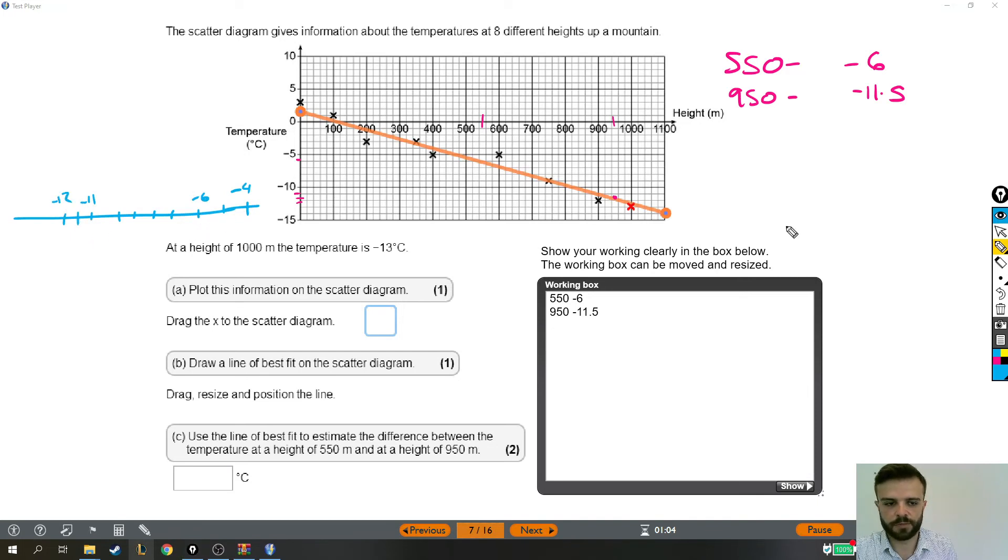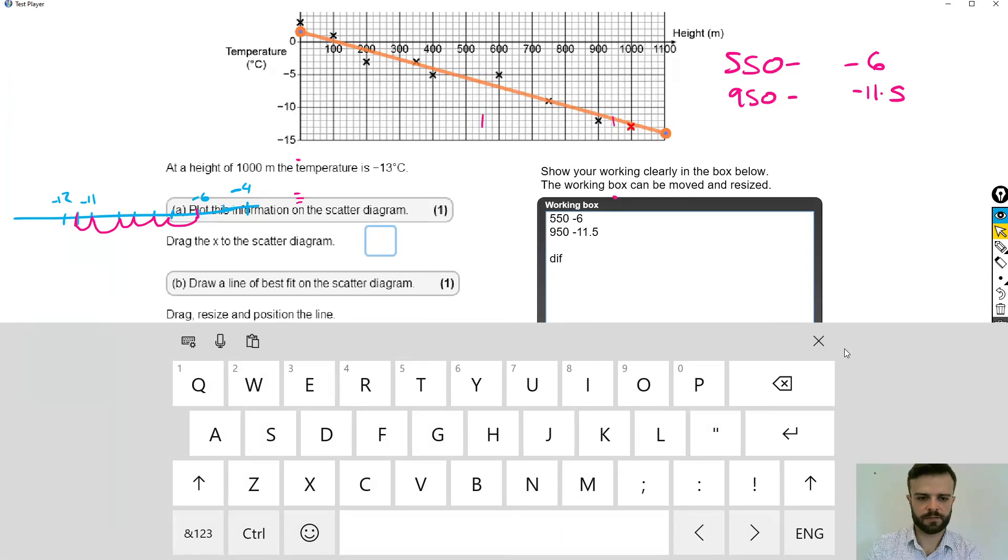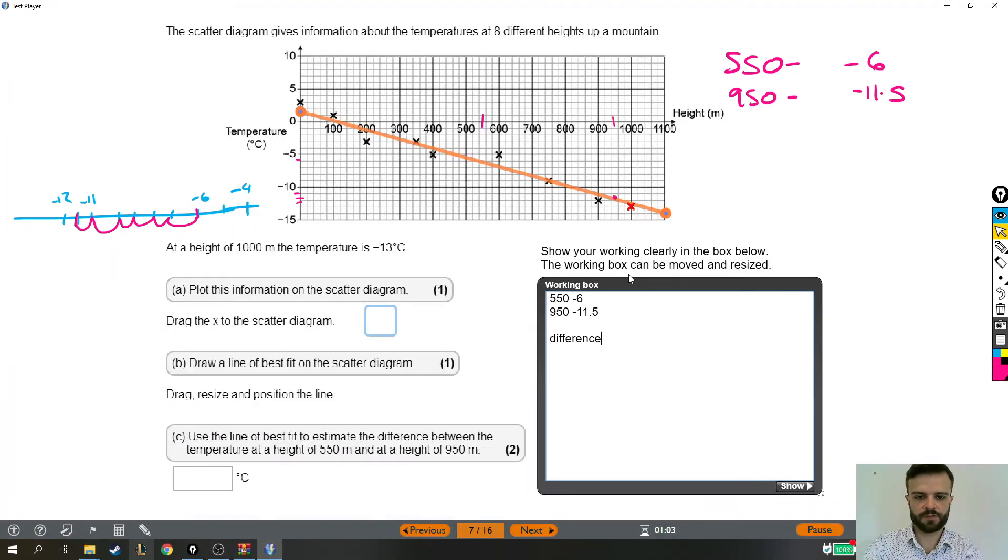We're trying to find the difference between minus 6 and minus 11.5. So that's a difference of 1, 2, 3, 4, 5 and a half. So the difference between them is 5 and a half. So I'm just going to put difference equals... Difference is 5.5. And there you have it. So the difference between them is 5.5 degrees.